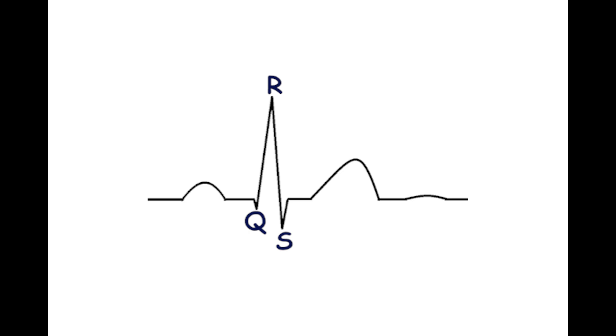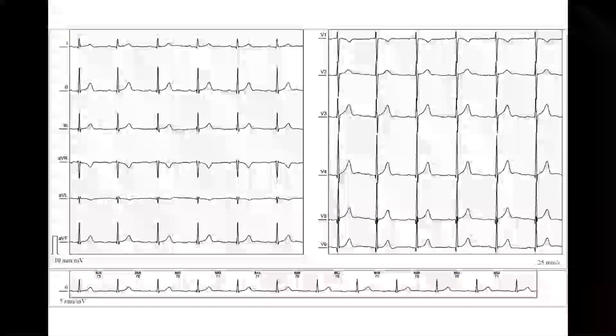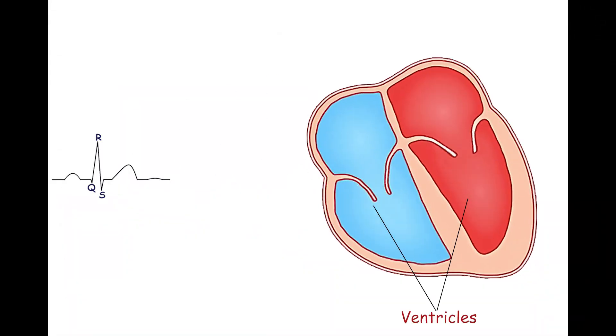It should be emphasized that a negative deflection after the R wave is called the S wave. If the negative deflection precedes the R wave, the latter is called the Q wave. The shape of the QRS complex varies greatly from lead to lead. The QRS complex represents ventricular depolarization.